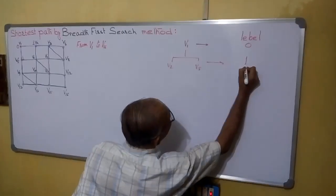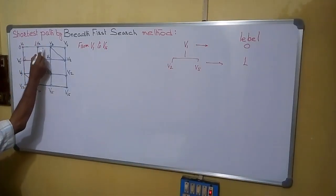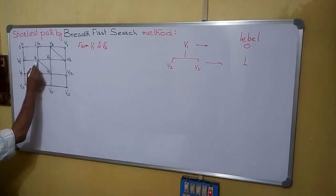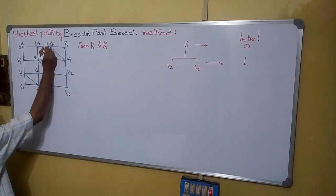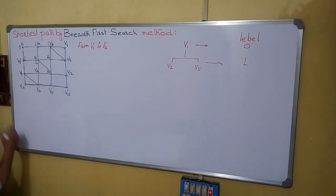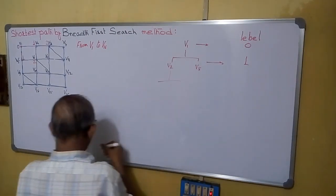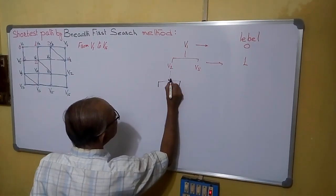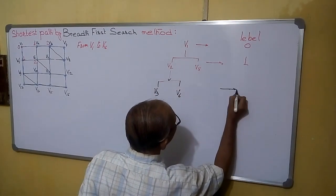Now again from V2 we can go to the adjacent vertices. The adjacent vertices are V3 and V6. So from V2 we are going to V3 and V6. So 1 plus 1 it will be 2 and V6 also mark as 2. Mark those as options 2.